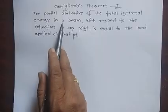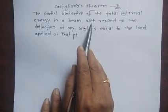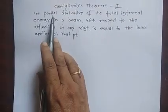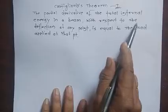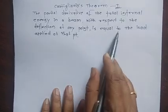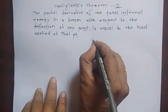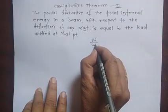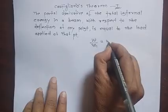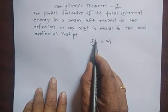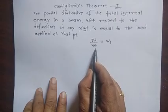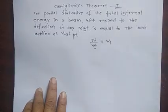The partial derivative of the total internal energy in the beam — that is U — with respect to the deflection delta at any point is equal to the total load applied at that point. That means del U by del delta 1 is equal to W1. So the partial derivative of total strain energy with respect to delta 1 equals W1.